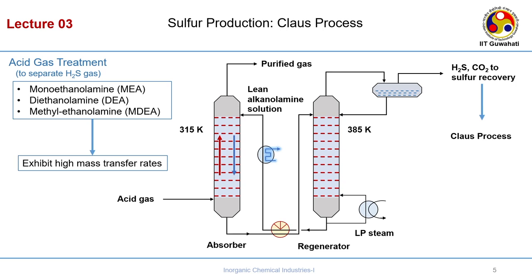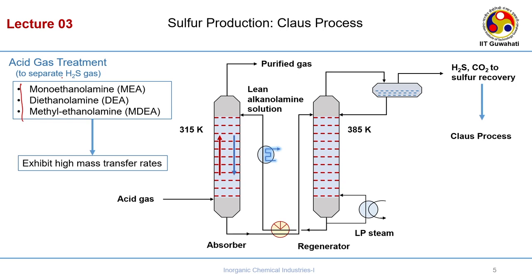What is acid gas treatment? The chemical solvents — monoethanolamine, diethanolamine, or methyldiethanolamine (MDEA) — exhibit high mass transfer rates and are used to separate H2S gas. The acid gas, which is CO2 plus H2S, passes through this alkaline amine solution through approximately 24 trays where absorption occurs at the appropriate temperature. The remaining purified gas can be sent to an incinerator and burnt.